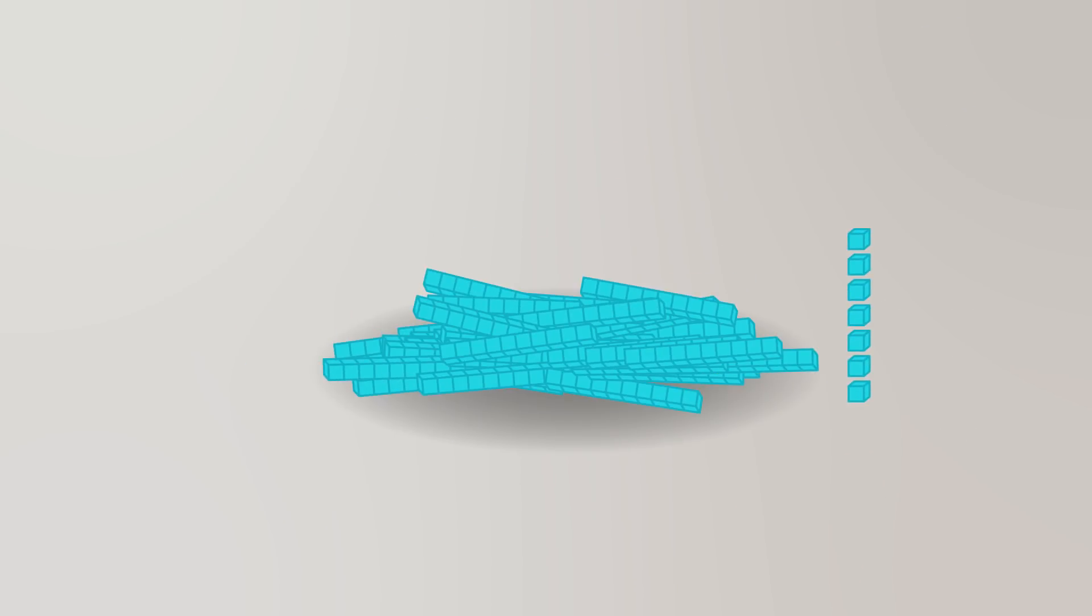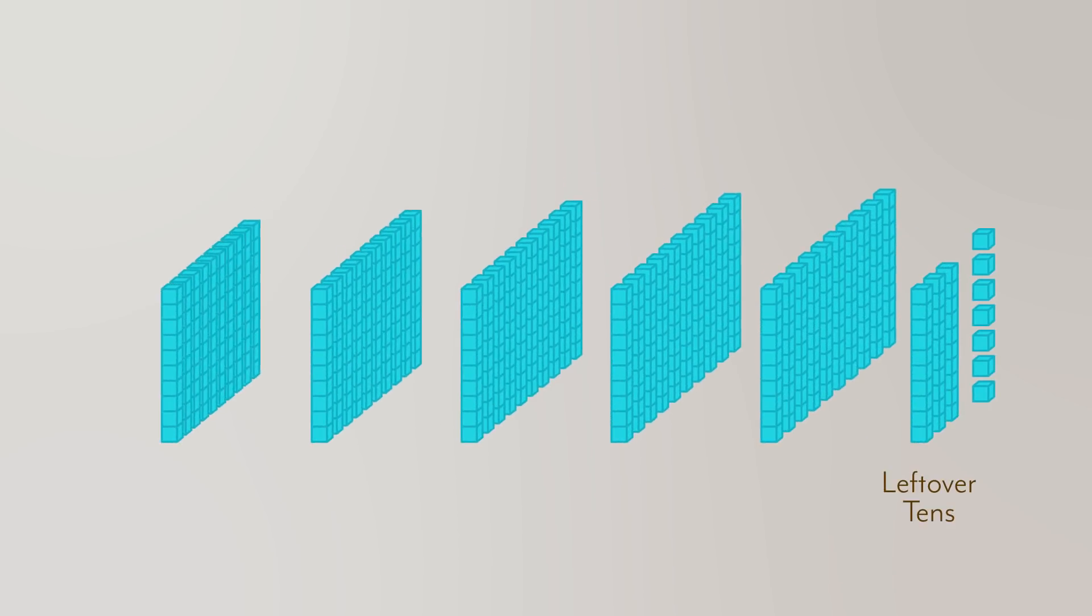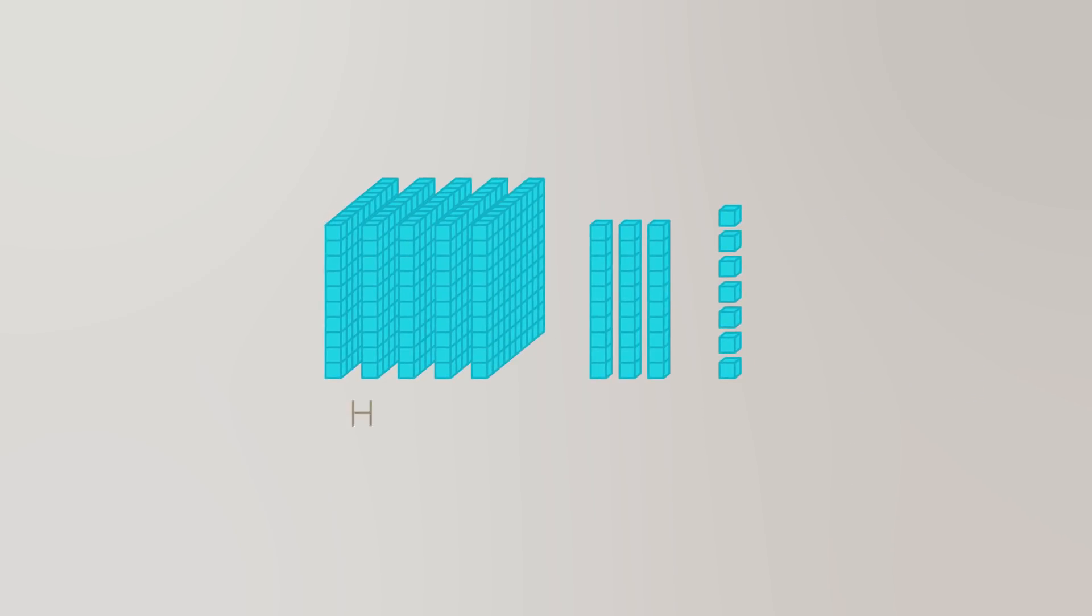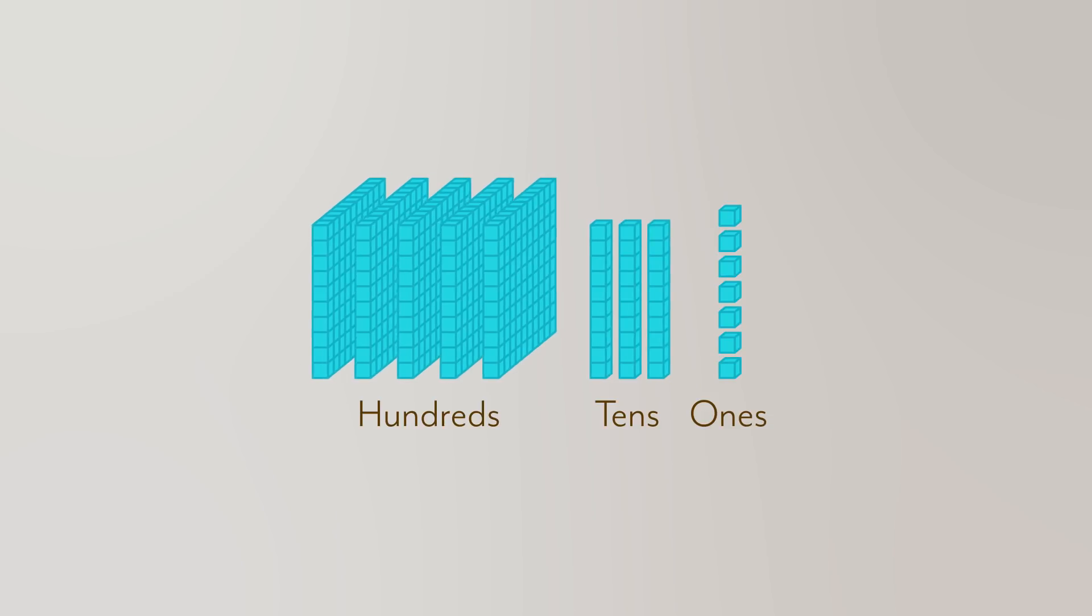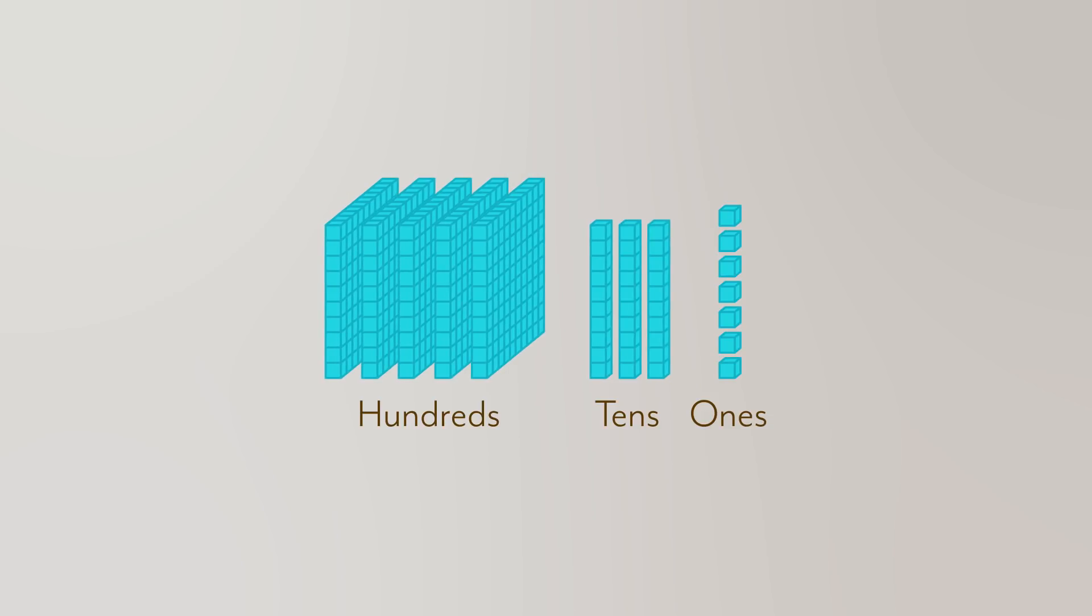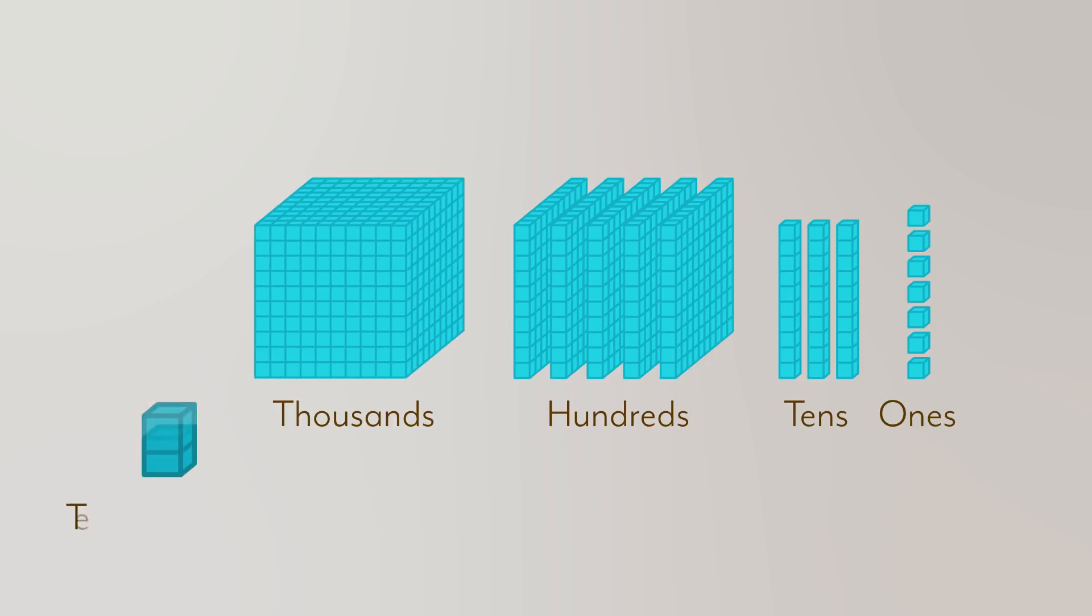Now we have another problem. We have a lot of tens. So let's repeat the process, taking chunks of tens into what we'll call hundreds. Well, this seemed to help because now we have a small pile of ones, a small pile of tens, and a small pile of hundreds. And there's no reason we couldn't continue this process for the thousands, the ten thousands, or anything beyond.